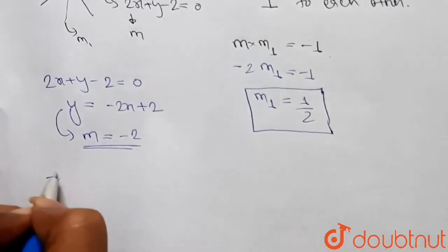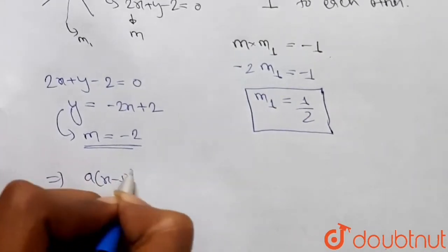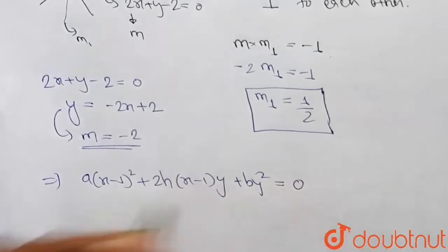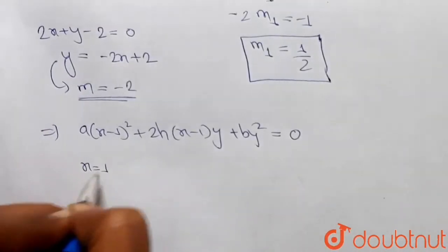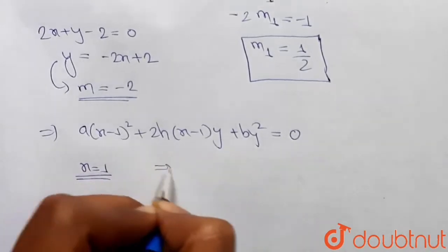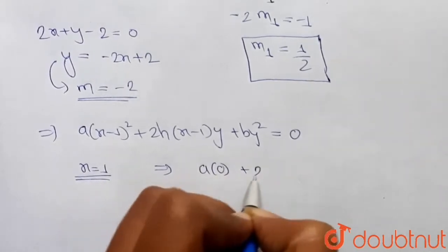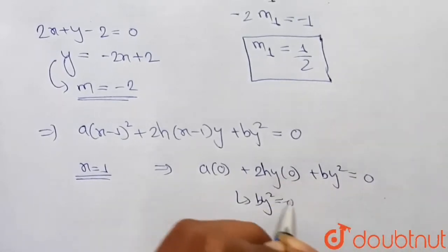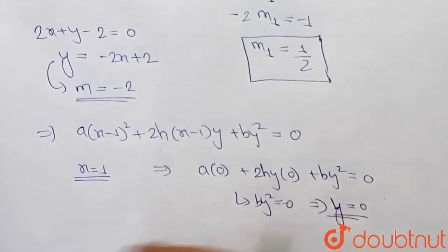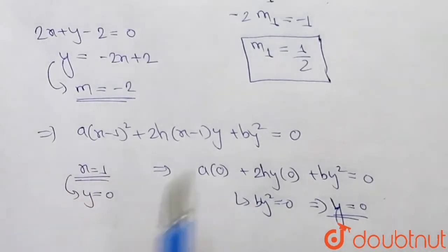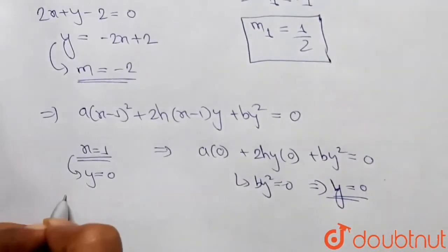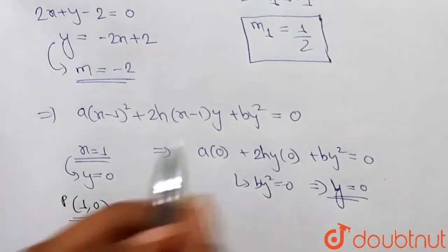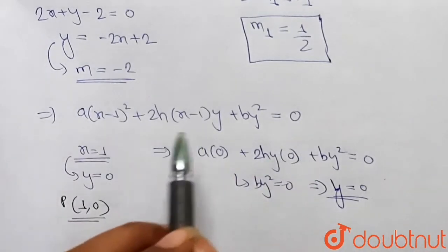The pair of lines is given as a(x - 1)² + 2h(x - 1)(y) + by² = 0. Putting x = 1 into this equation gives a(0) + 2hy(0) + by² = 0, that is by² = 0, so y = 0. So the point (1, 0) lies on this pair of lines.